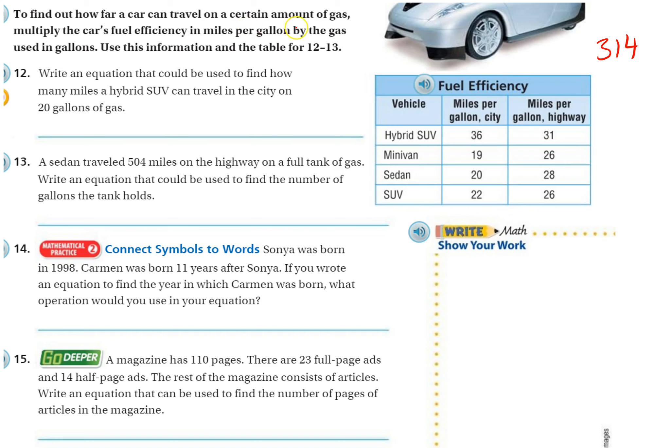To find out how far a car can travel on a certain amount of gas, multiply the car's fuel efficiency in miles per gallon by the gas used in gallons. Use this information from the table for problems 12 and 13. So here's our table that we're going to be using. It told us what to do with that information: multiply the fuel efficiency in miles per gallon by the gallons used. So write an equation that could be used to find out how many miles a hybrid SUV can travel in the city on 20 gallons of gas.